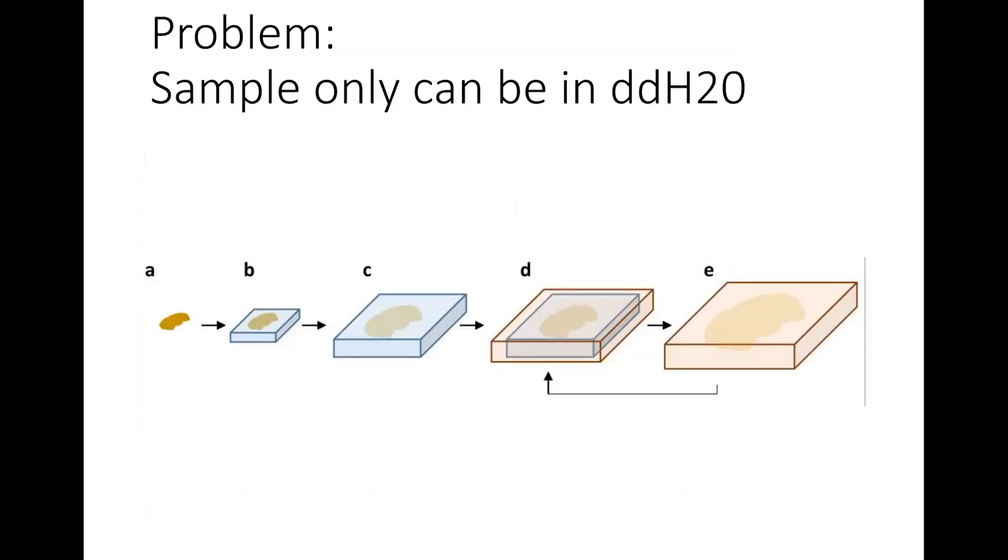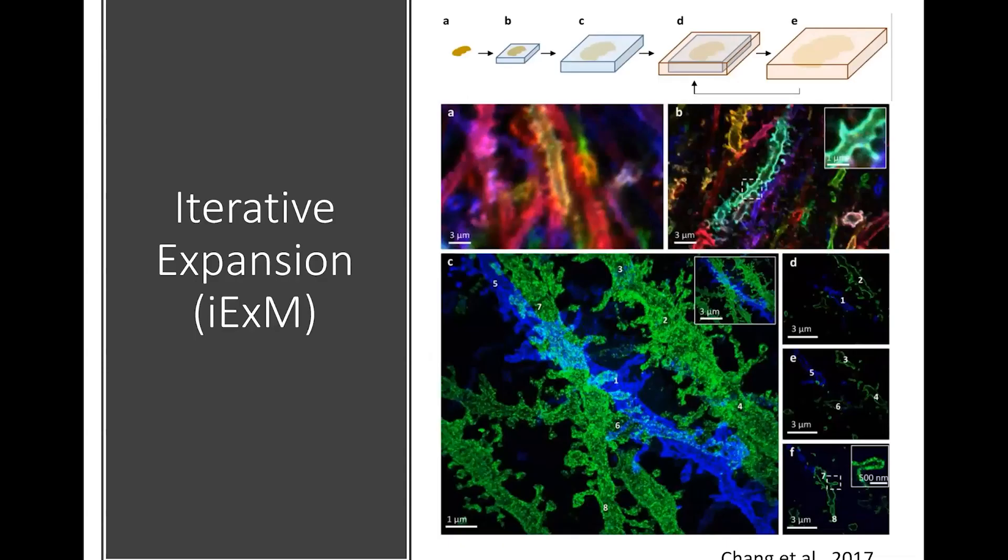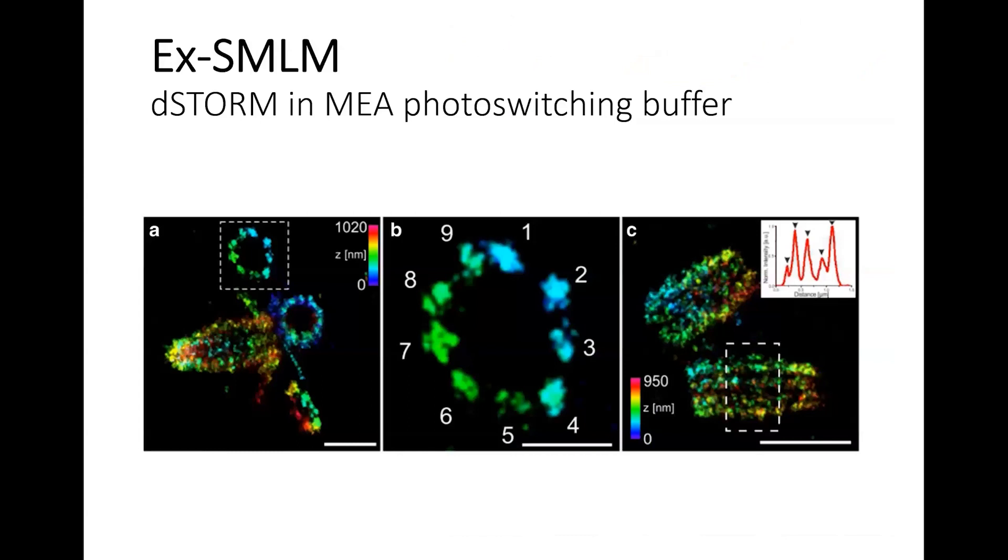Another problem you run into, these samples can only be imaged in pure water. So no PBS, no blinking solutions to be able to do this. So one of the ways to get around this is iterative expansion microscopy. Effectively, you do expansion microscopy and then re-embed it into the gel. You can do this multiple times if you're looking to increase your expansion factor into, say, the 25 times range. Or you can do this and add it to single molecule localization microscopy. And in this way, the researchers have been able to do dSTORM and be able to look at the structure of the centrosome in nine-fold symmetry.